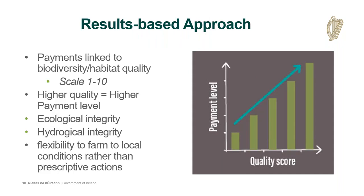The results-based approach is based on a scale of 1 to 10, with the objective of rating the quality of the habitat in place. Payment level is related to the score — a 10 out of 10 gets the highest payment possible, and as you move down the scale, payment levels are reduced. Overall, this helps assess the ecological and hydrological integrity of habitats and allows flexibility at farm and local levels rather than the very prescriptive actions that were in place under GLAS.